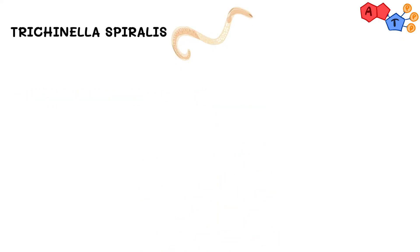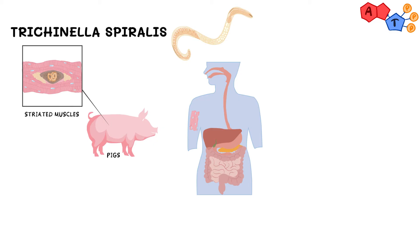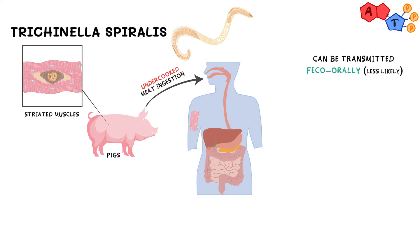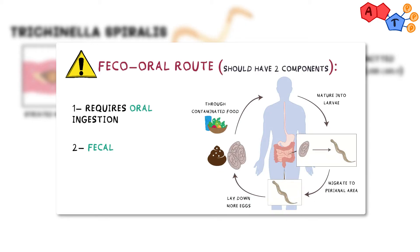Then we have Trichinella spiralis. This worm can be found in pigs, rodents, and carnivores. Pro tip: always link spiralis to striated muscles, which is where it's found in animals and the structure that it invades in humans. Trichinella spiralis is transmitted through ingestion of undercooked meat, pork in particular, or other infected animals. Less likely, it can be a result of fecal-oral route. Please note that although both ways include oral ingestion of encysted larvae, they are considered different. Fecal-oral route requires a cycle of oral ingestion and then fecal excretion which can transmit the pathogens to other humans, similar to what we saw in Enterobius and Ascaris.